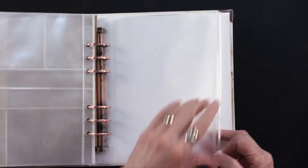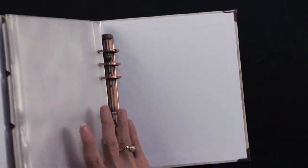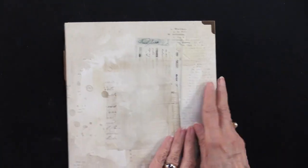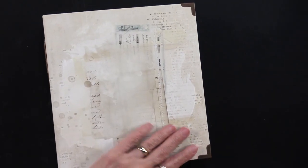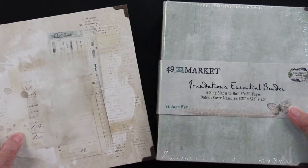Then there is this Ziploc pocket in the back that's attached. So you can add some things. Or as you're working, you can keep your pieces inside. So just really a treasure. Now, it does come in this one. This is the vintage cream. There is also a vintage sky.